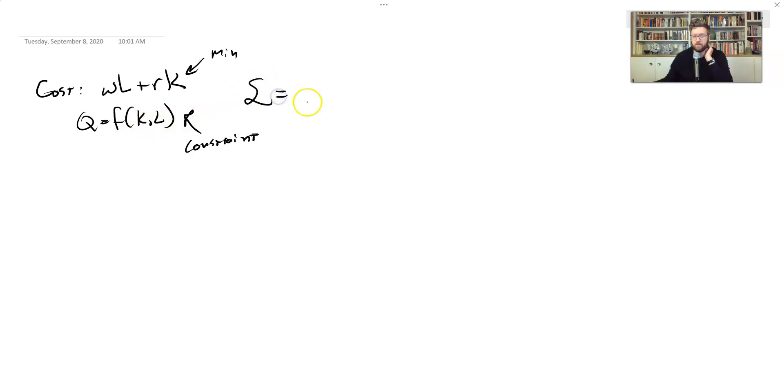So if we're going to set up a Lagrangian, we first need our objective function, and that's the thing we're trying to minimize. Remember, step one of a Lagrangian is set it up correctly. If you do it incorrectly, you're in trouble. So are we trying to maximize this? No, we're not trying to maximize output. We're trying to minimize cost. So this is our first step.